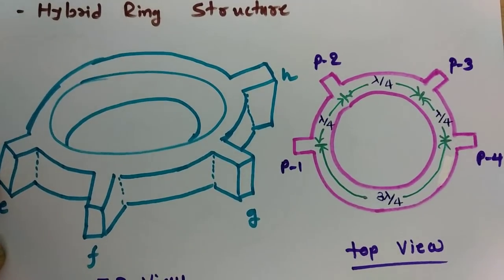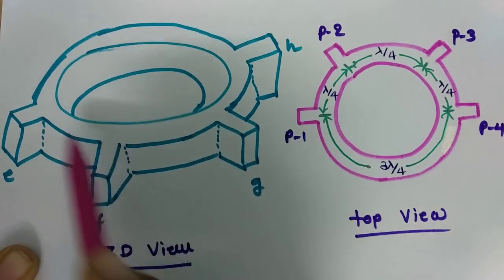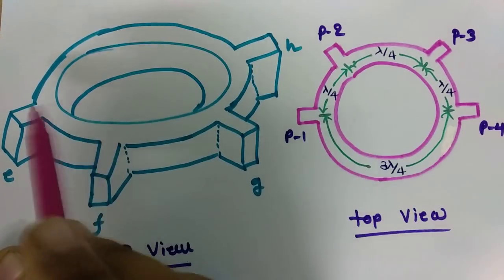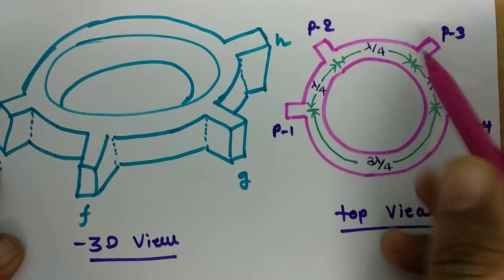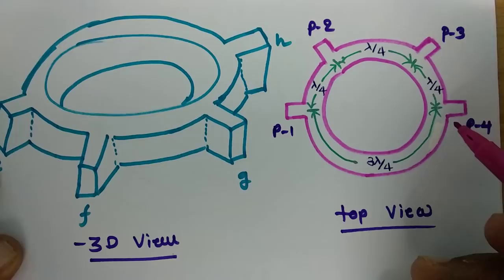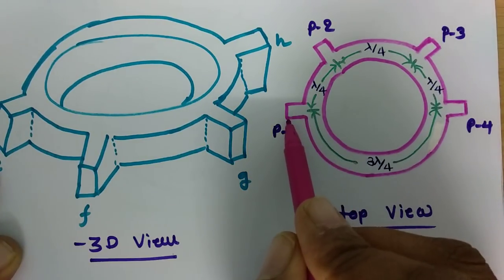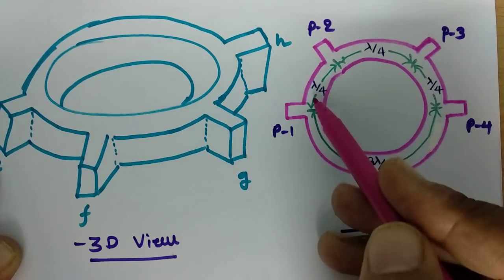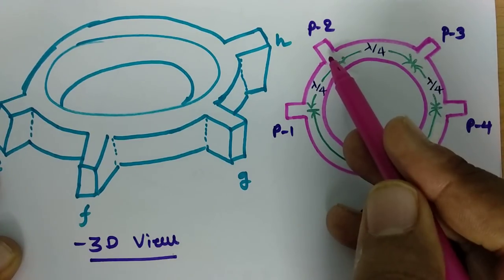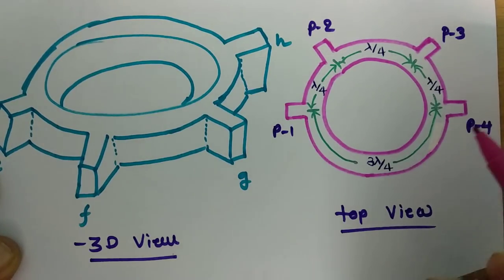Let us move on to the hybrid ring structure. In the 3D structure one can see a waveguide molded into a circular pattern with four junctions. If we see it from the top, those junctions are like this. The hybrid ring has four arms, and if port 1 is here, then the ports are separated by a lambda/4 arc length. The arc from port 1 to 2, 2 to 3, and 3 to 4 is lambda/4, while from port 4 back to port 1 the length is 3 lambda/4.